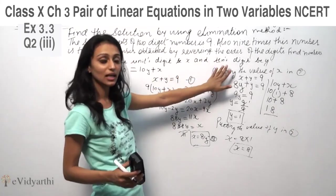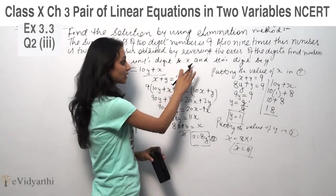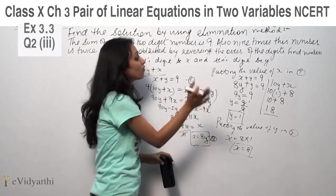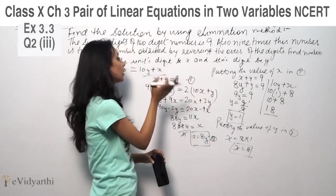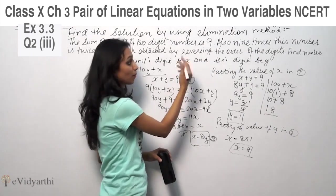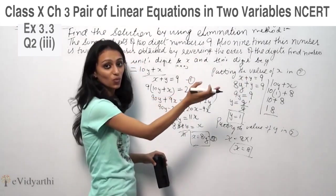So the first step is to select the digits. If you select units digit as x and tens as y, then the number is 10y plus x. If you select units digit as y and tens as x, then the number would be 10x plus y.